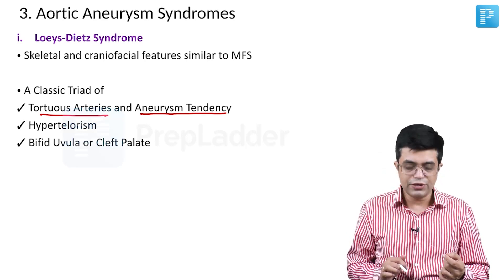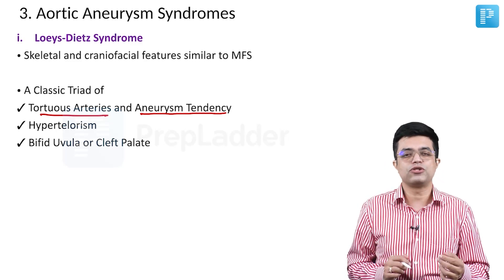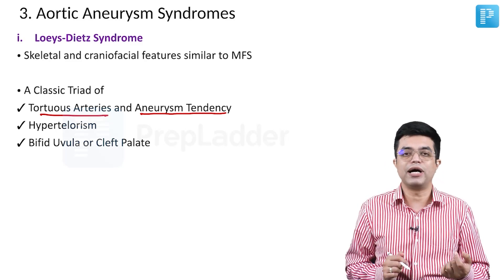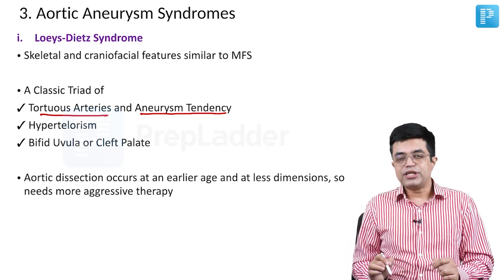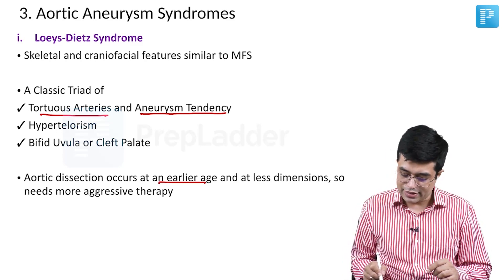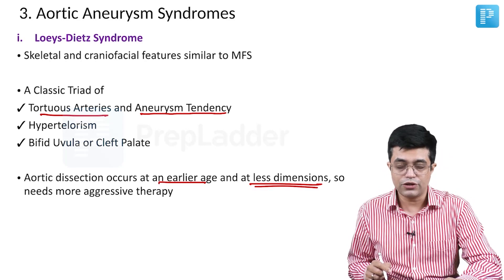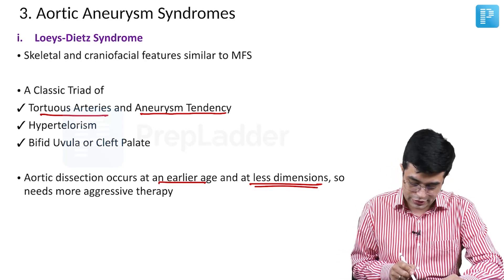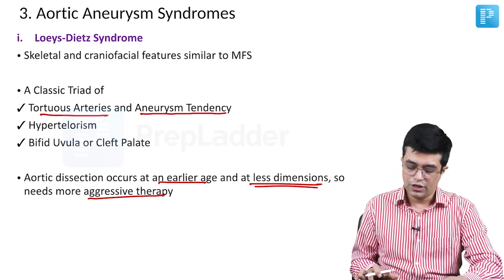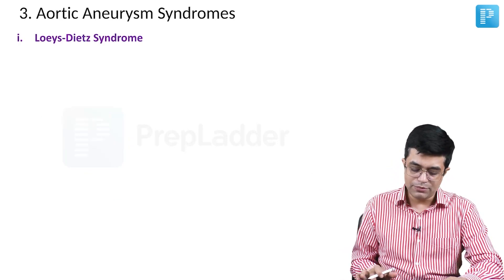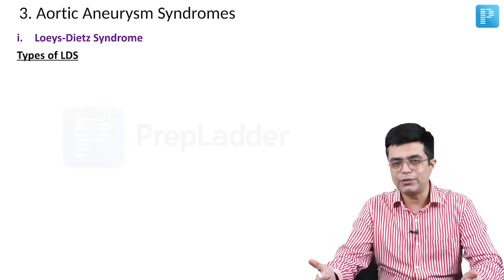The third feature of Loeys-Dietz syndrome is cleft palate, which may or may not be associated with bifid uvula. Aortic dissection in these patients occurs at an earlier age and at lesser dimensions compared to Marfan syndrome, so aggressive therapy needs to be given in patients of Loeys-Dietz syndrome.